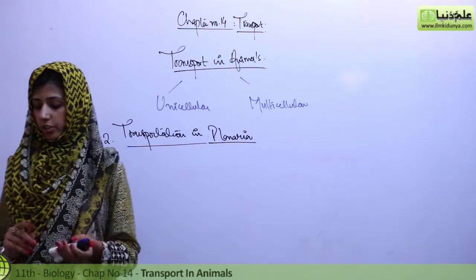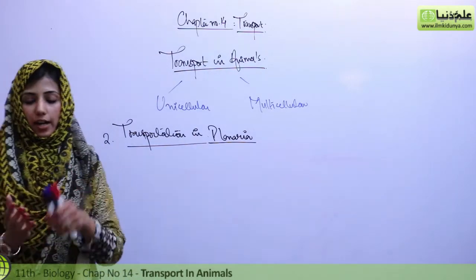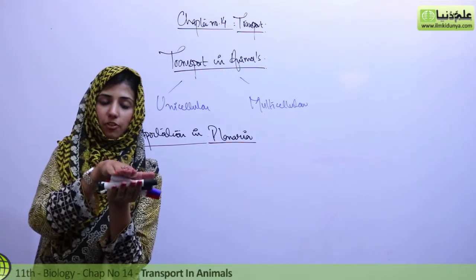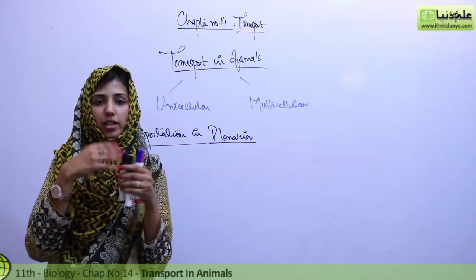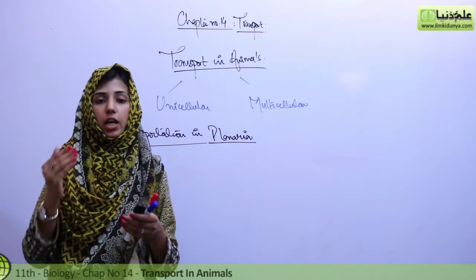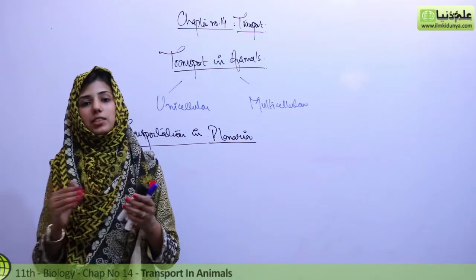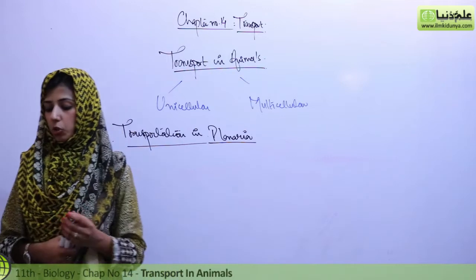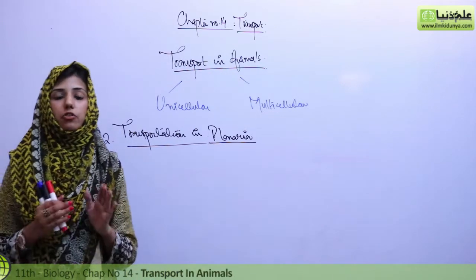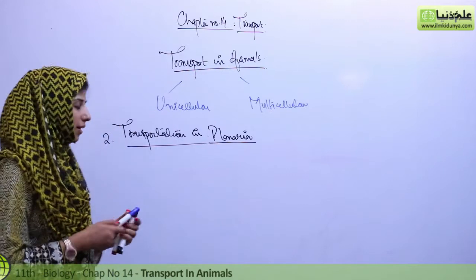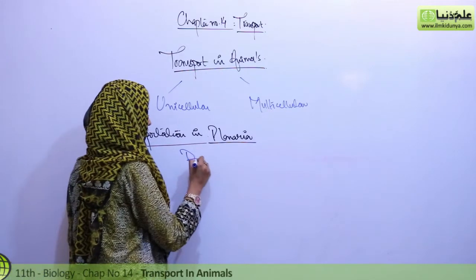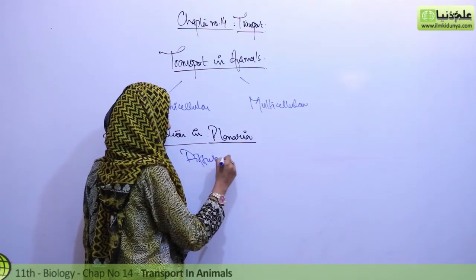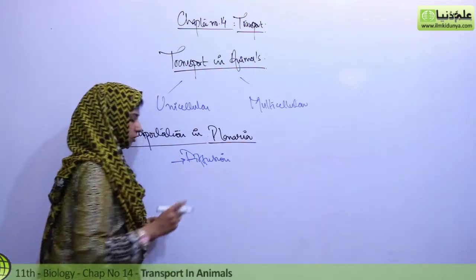It is a flat organism and because it is flat, its body cells are exposed to the external environment. And as much exposed to the external environment, it is easily the diffusion process, so here the mechanism involved is also the process of diffusion. Diffusion is involved.